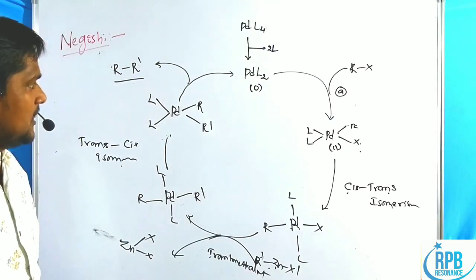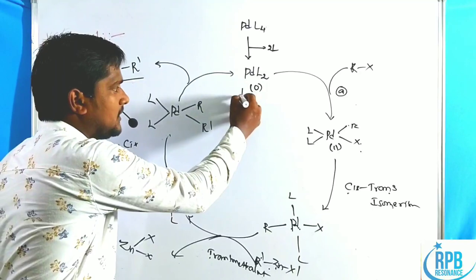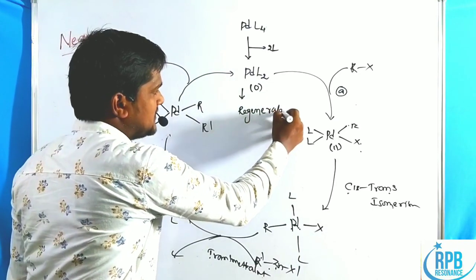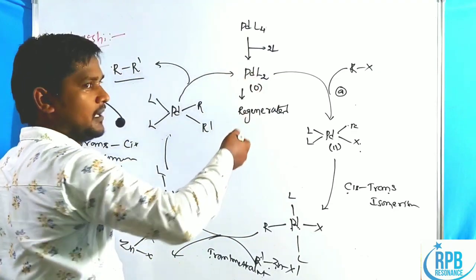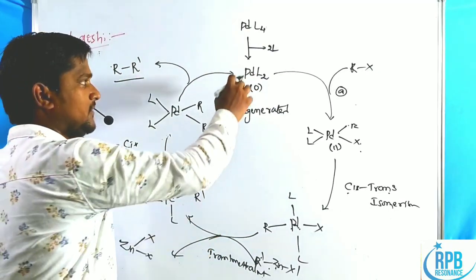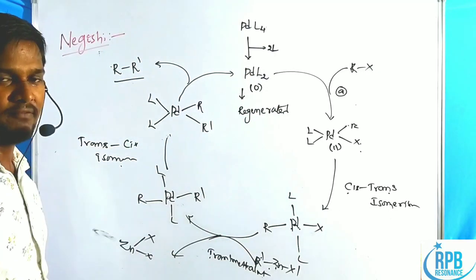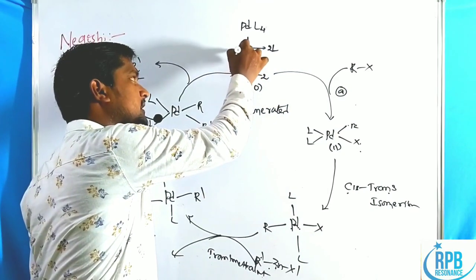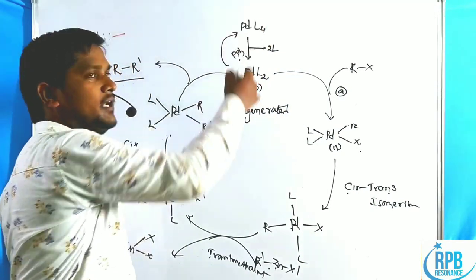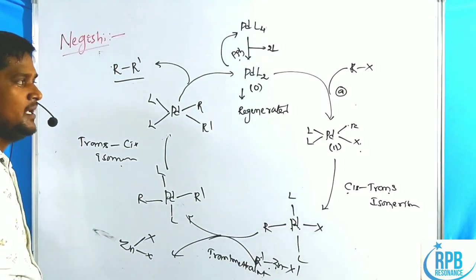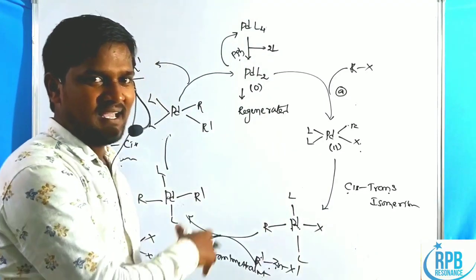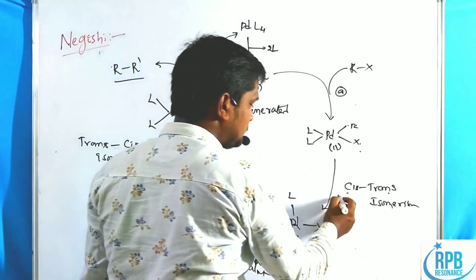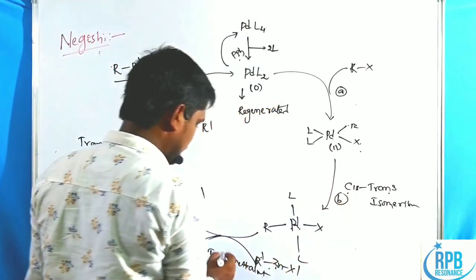Our catalyst is regenerated. If we take palladium(PPh₃)₄ — four equivalents of PPh₃ — adding back the PPh₃ ligands regenerates the Pd(L₄) complex. This is the complete catalytic cycle for the Negishi coupling. It involves five steps: A, B, C, D, E.